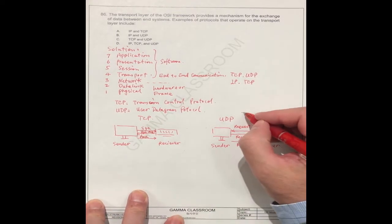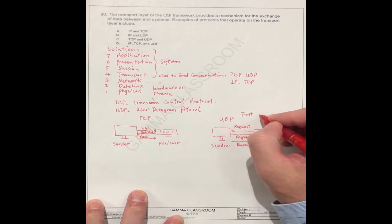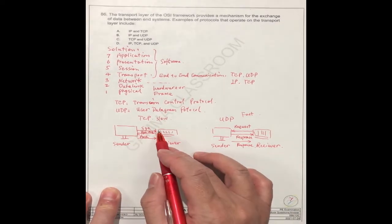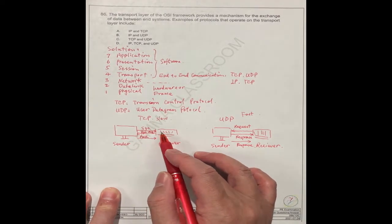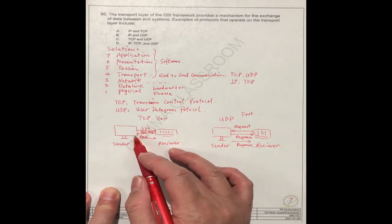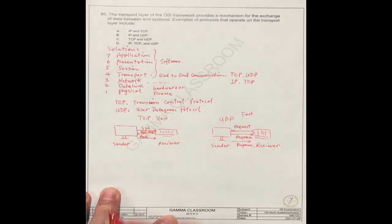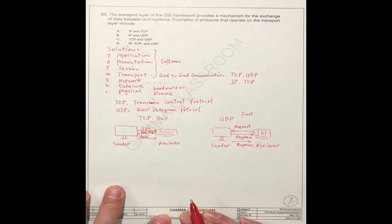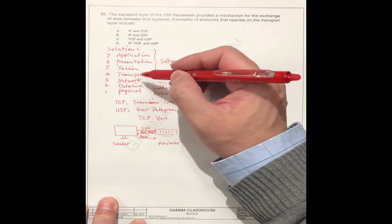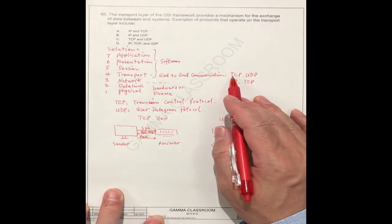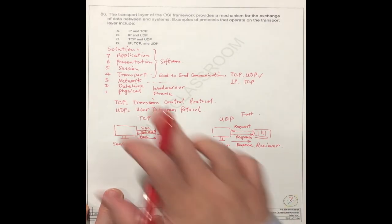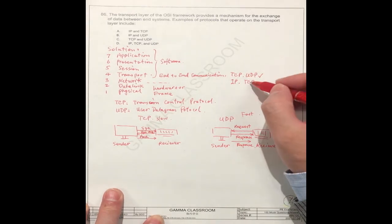So this one is fast. This is slow speed. The speed is slow because this needs to send the synchronize and get the response to the sender. This is faster, this is slower. So for the transport layer, we always use TCP and UDP. For the network, we always use IP and TCP.